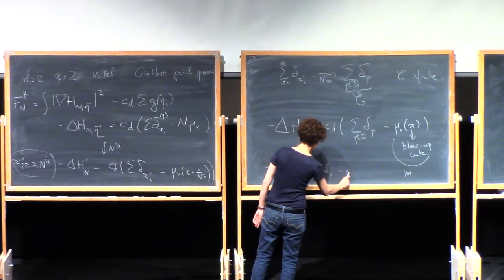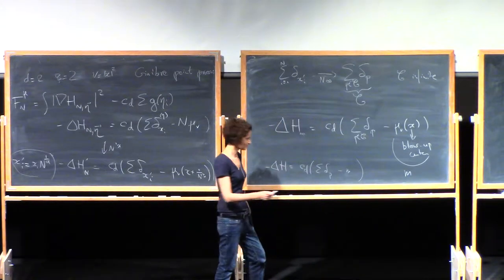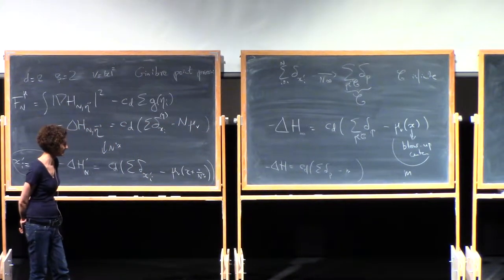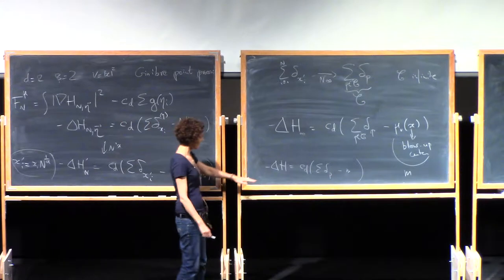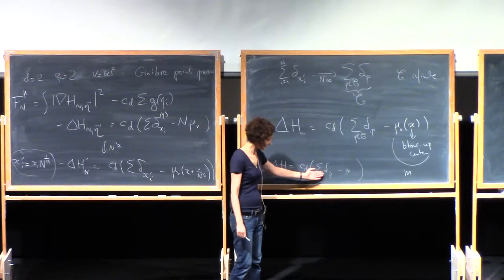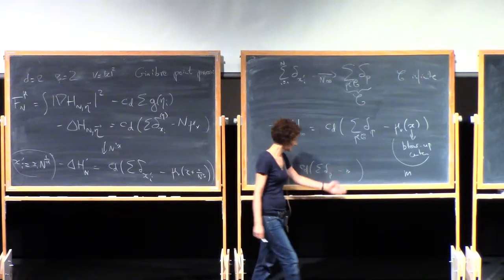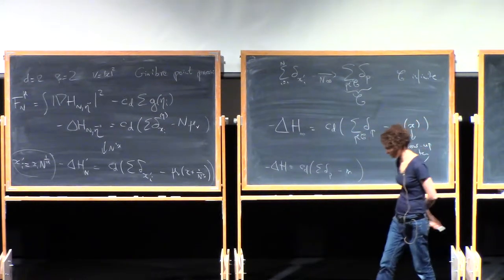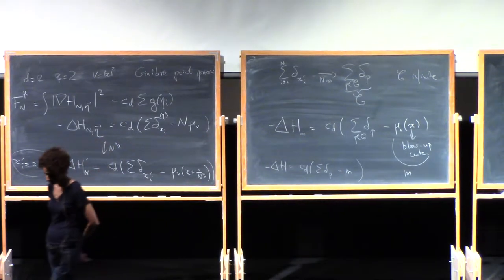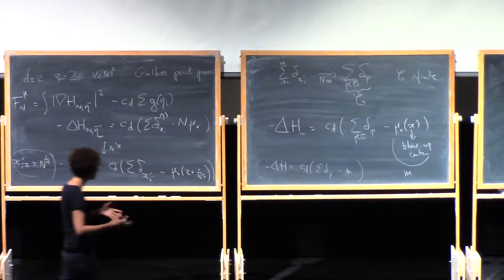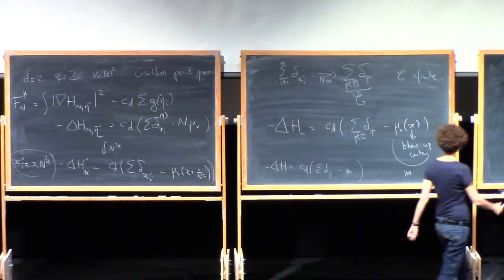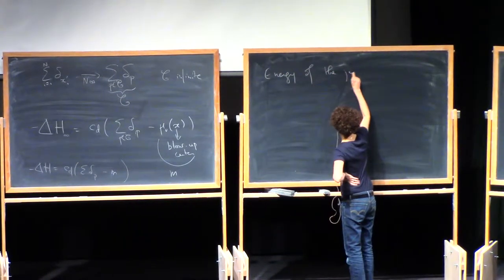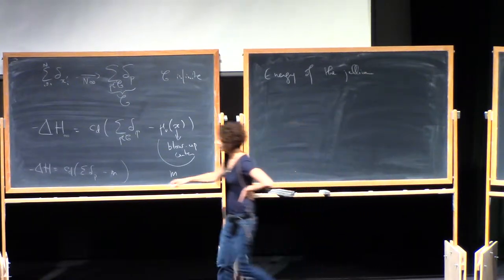When we rescale everything we find ourselves with an equation: a sum of Diracs minus a constant m. There is an analogue in dimension one as well. So we have a system which is an infinite configuration of point Dirac charges and a uniform negative background charge minus m. Physicists call a system like this a jellium — a system which is globally neutral.